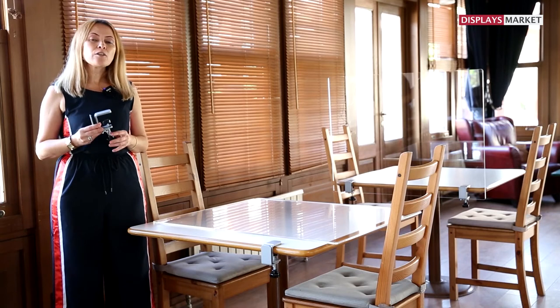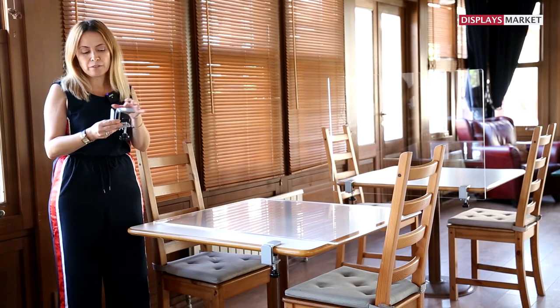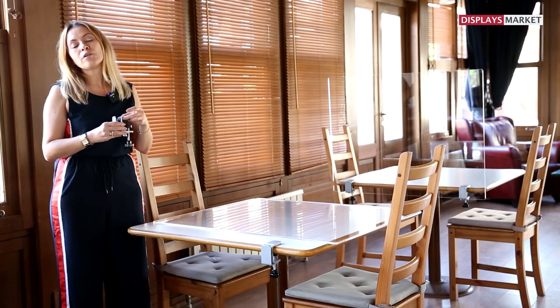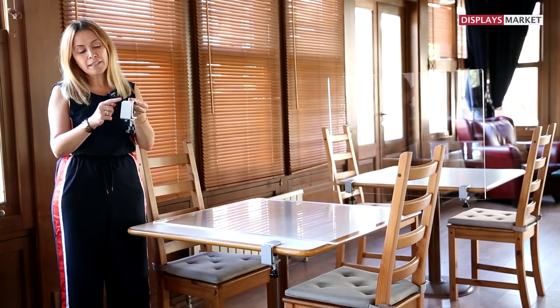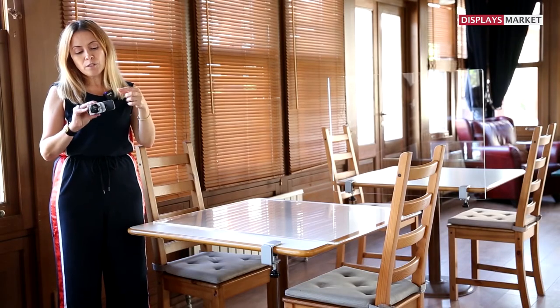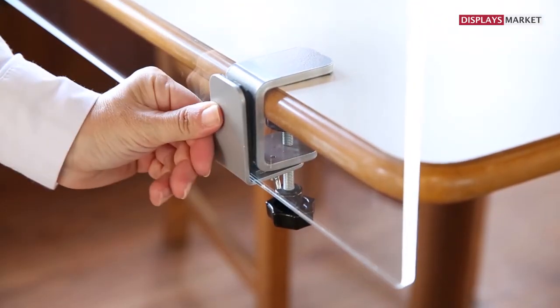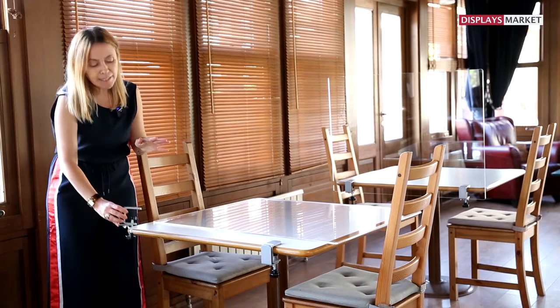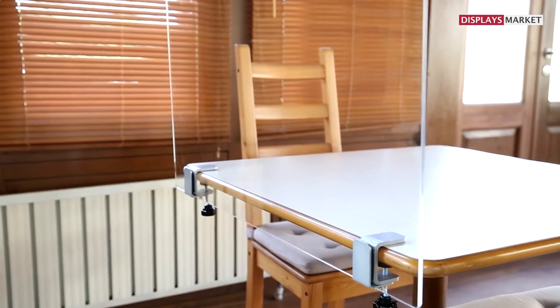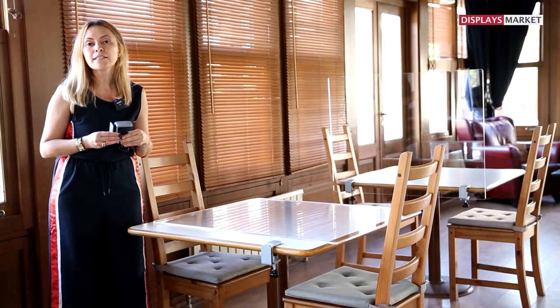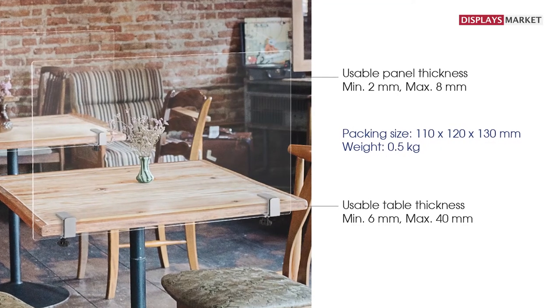This removable kit includes a pair of brackets to secure the panels. It's made of sturdy powder coated steel and inside coated with EVA to avoid scratching the table or panel. It fits 6mm up to 40mm thick tables.